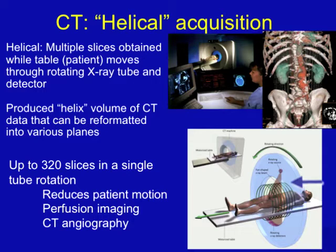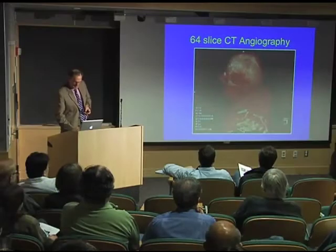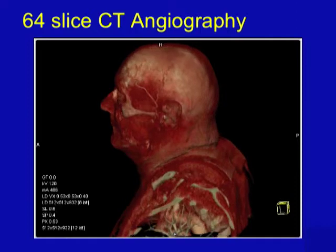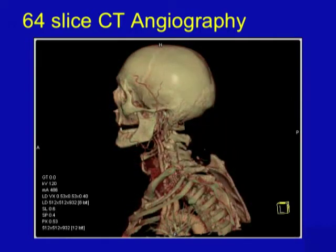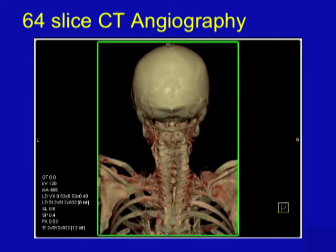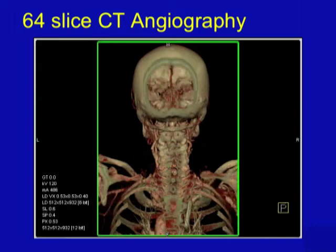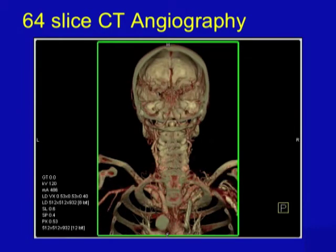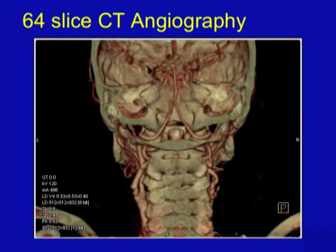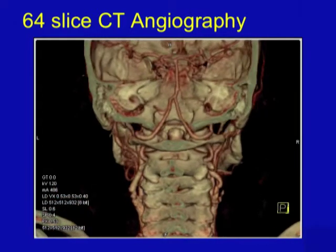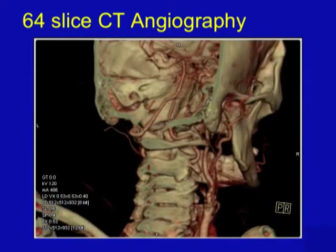One can actually use this data to form these beautiful pictures as you see here. Here's just one example of a patient. Watch how we can take a CT scan data set and using modern computers, we can see the arteries and the inside of the brain where the arteries are.